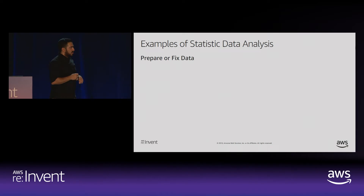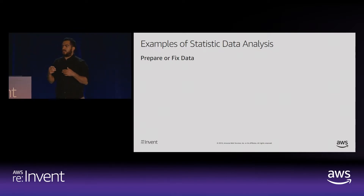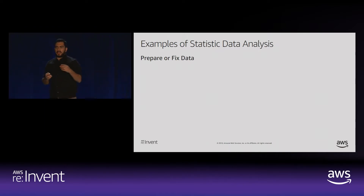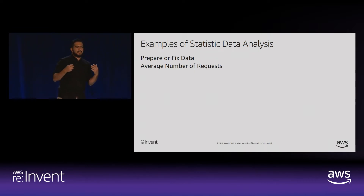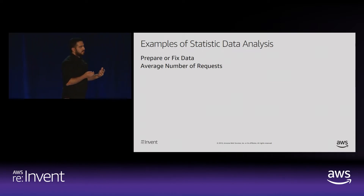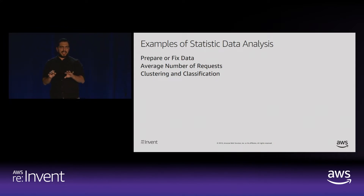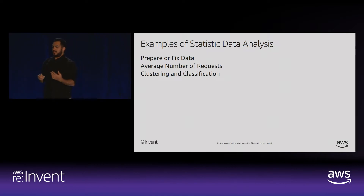One example of applying statistical data analysis is preparing or fixing data. That's usually the first process you run every time you're collecting and working with your data. It's not always as simple as just ETL — extract, transform, and load. You'll often need more complex algorithms. You're going to need to work with average number of requests, distributions, percentiles, and different ways to interpret the data. You'll also need clustering and classification to find out which data is useful for what, especially since you're collecting from multiple sources.